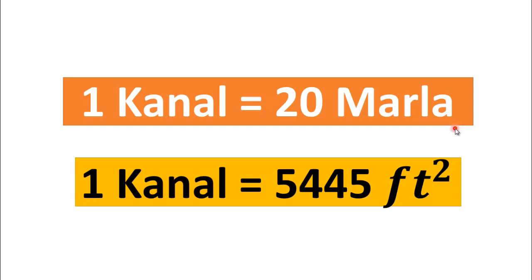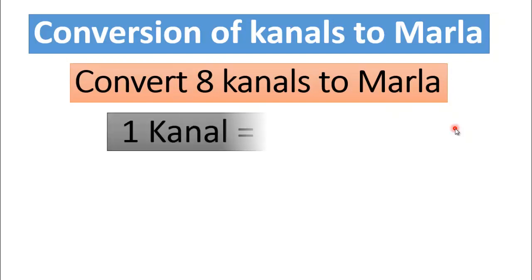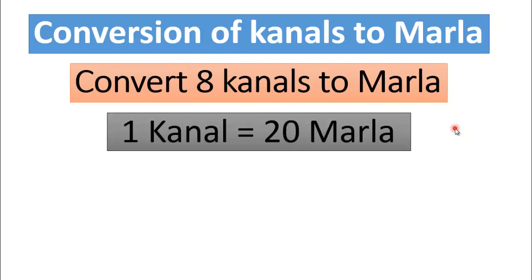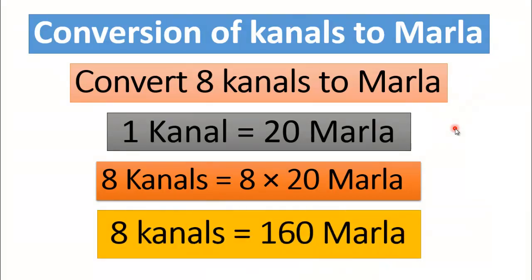Now we will solve some numerical problems related to conversion of canal to Marla and canal to square feet, and vice versa. First, we will discuss the conversion of canals to Marla. For this purpose, we convert 8 canals to Marla. Since one canal is equal to 20 Marla, just multiply 8 by 20. After simple calculation, 8 canals is equal to 160 Marla.